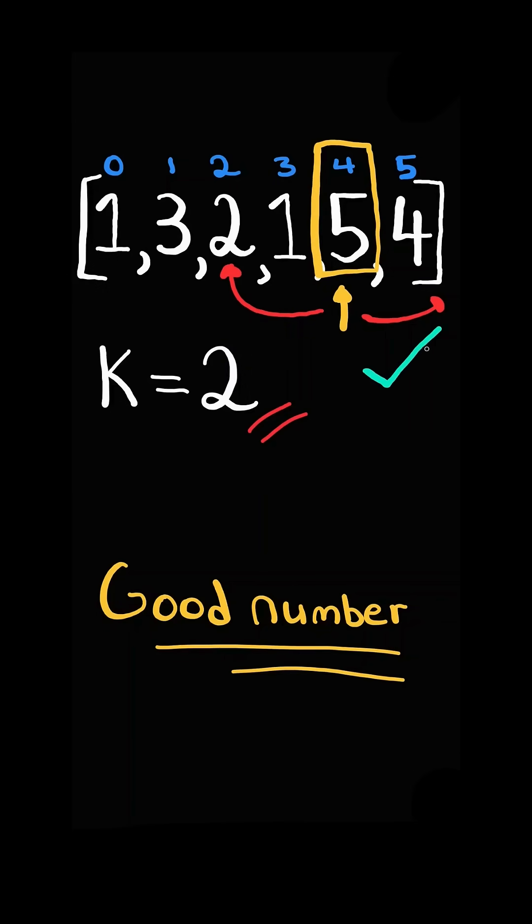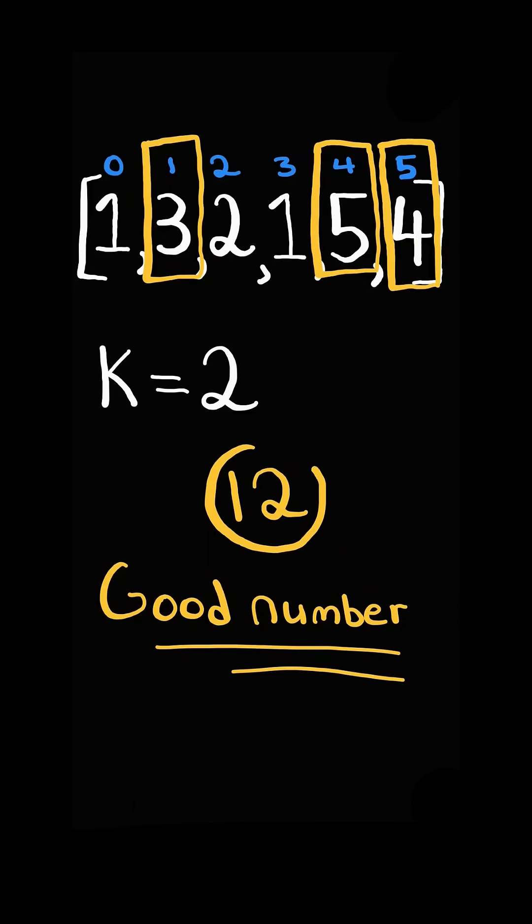In this case, 5 is a good number. 3 and 4 are also good numbers. Return the sum of all the good numbers.